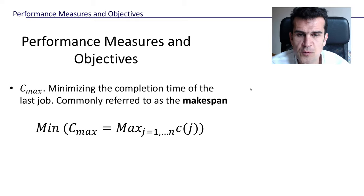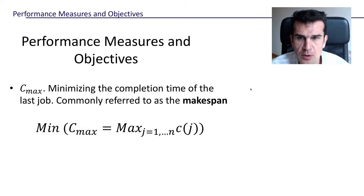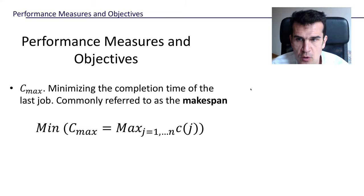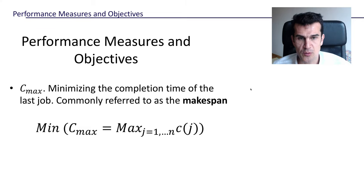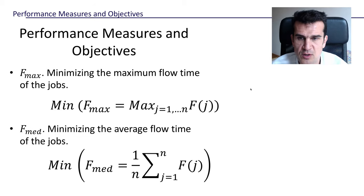In this video we're going to see different performance measures that we may be interested in and different objectives that we may have in the scheduling problem. The most common objective is to minimize the completion time of the last job of all the jobs. This is called C_max because it's the maximum completion time, commonly referred to as the makespan, and it's basically how long it takes us to process all the jobs.